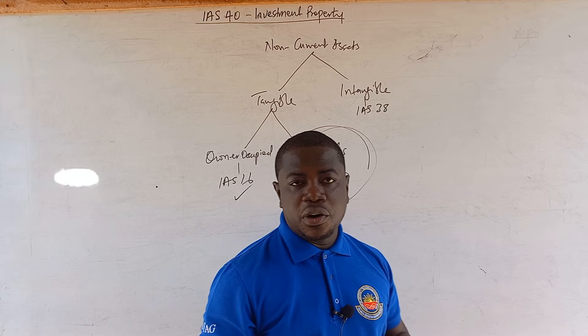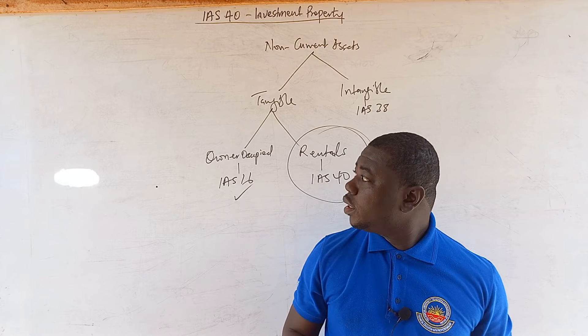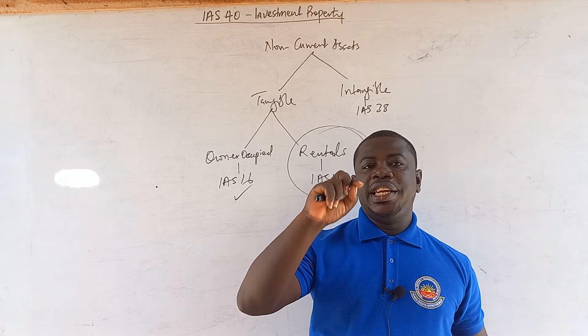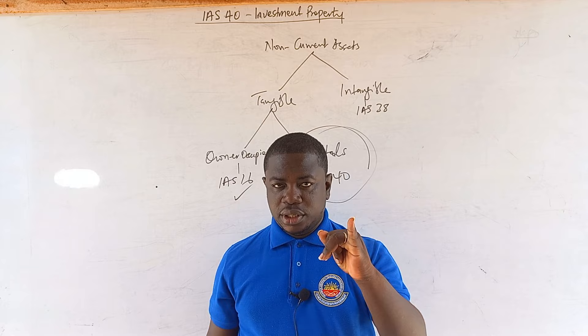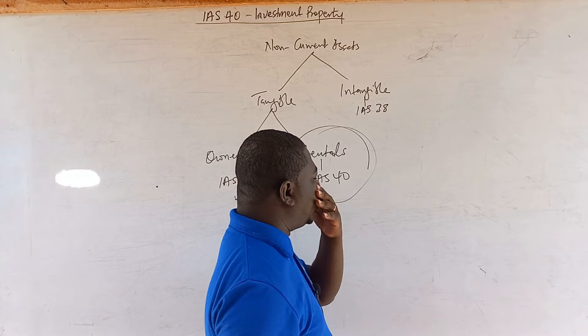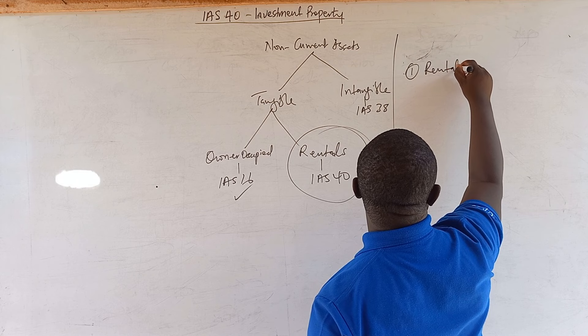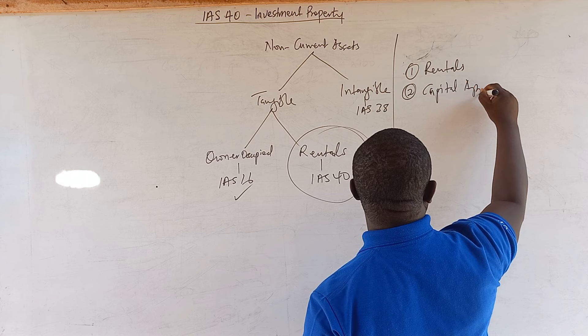What is investment property? Investment property refers to tangible non-current assets that are held for two reasons — either one or both at the same time. One, for rentals. Two, for capital appreciation. So investment property is about tangible non-current assets that are held for rentals, capital appreciation, or both.